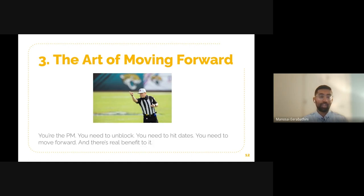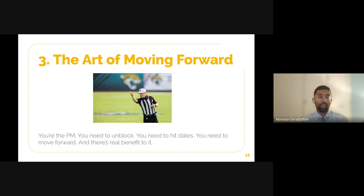It cannot be stressed enough how important it is for you as a PM to find ways to unblock your team and make progress. You have to hit dates, hit launch timelines, validate or invalidate hypotheses. There's actual benefit in playing the role of master executor and ruthlessly unblocking things that are getting in the way of your team. Whether you're a PM at the most technically complex ML company who needs to know how to write code, or an experience-focused PM who stays away from the code and loves working in the world of design — both scenarios require you to identify where you need to get to, move the team forward, rally folks around you, and build consensus and momentum.